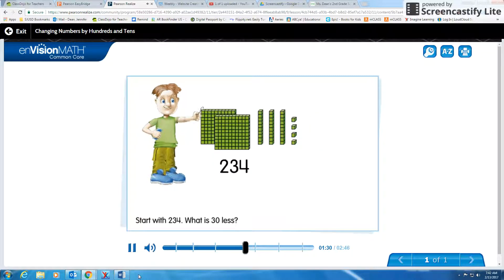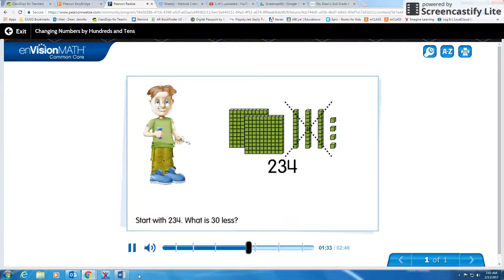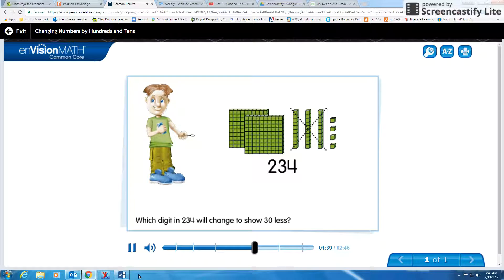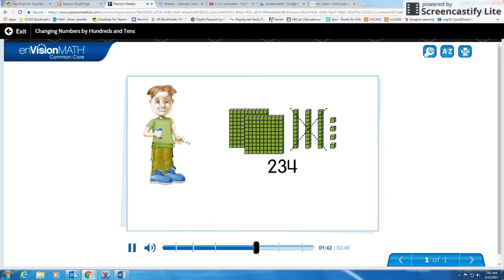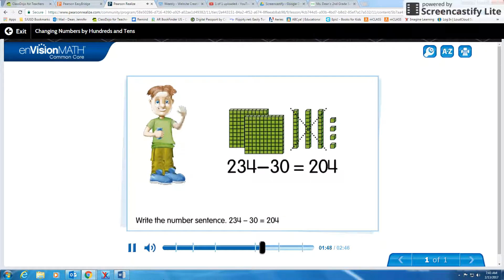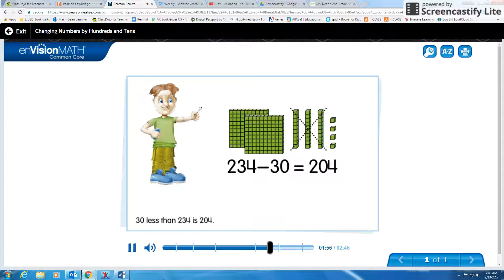Start with 234. What is 30 less? Which digit in 234 will change to show 30 less? The tens digit will change. Write the number sentence. 234 minus 30 equals 204. 30 less than 234 is 204.